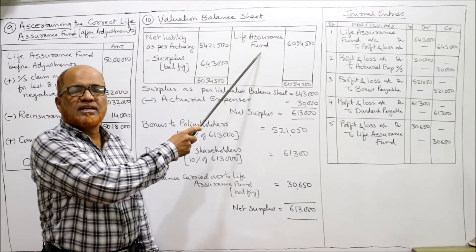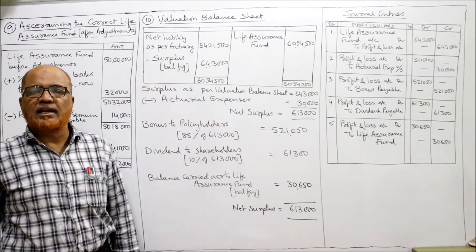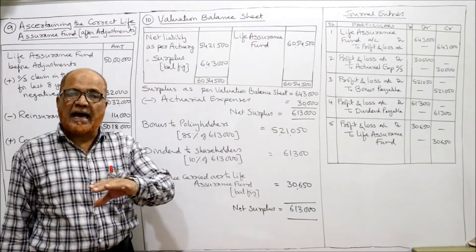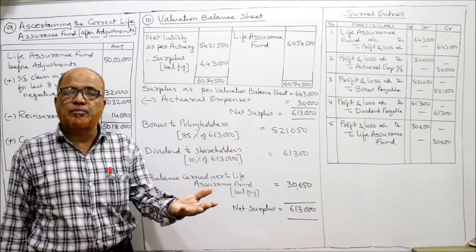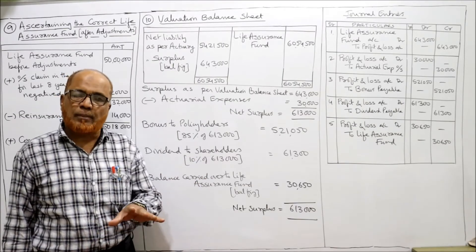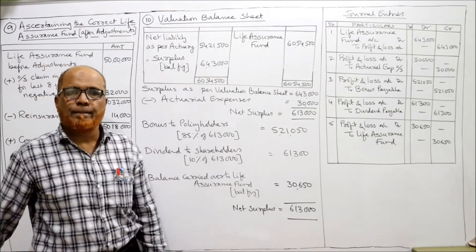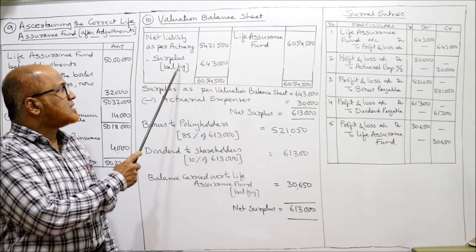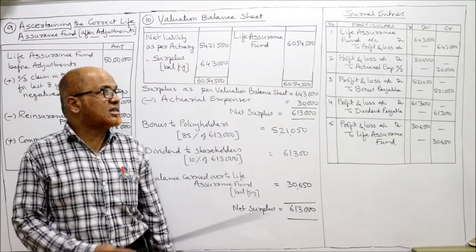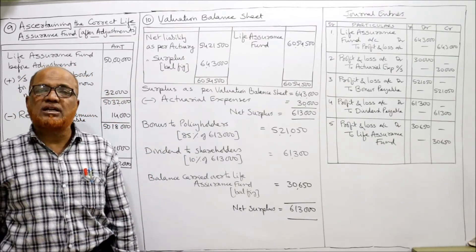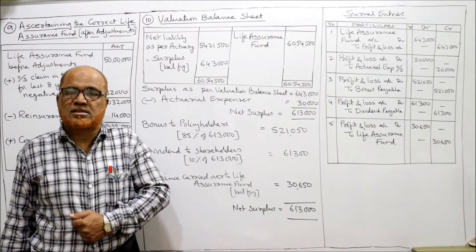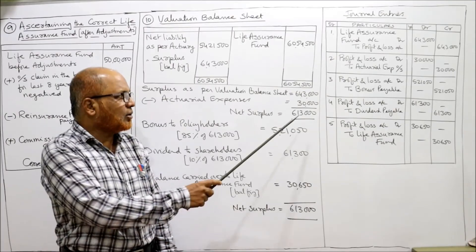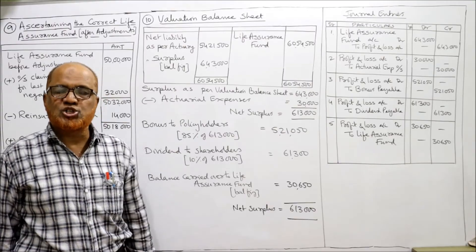We make the valuation balance sheet. On the right-hand side we take the life assurance fund given as ₹60,54,500. On the left-hand side we take the net liability as per the actuary — ₹54,21,500. The balancing figure is surplus of ₹6,43,000. First, ₹30,000 is kept aside for actuarial expenses, leaving a net surplus available for disposal of ₹6,13,000.